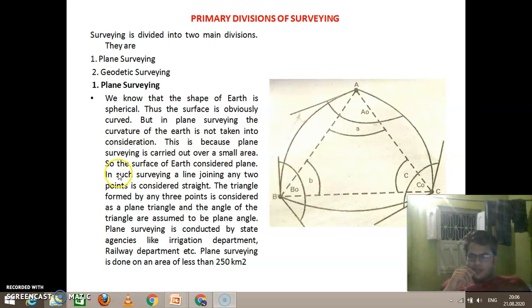This is because plane surveying is carried out over a small area, so the surface of Earth is considered plane. In such surveying, a line joining any two points is considered straight.